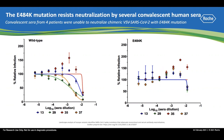The identification of B.1.1.7 and B.1.351 variants underscores the importance of using NGS for genomic surveillance.